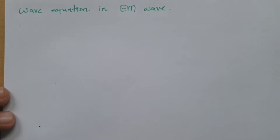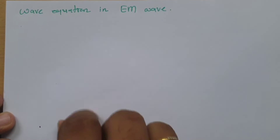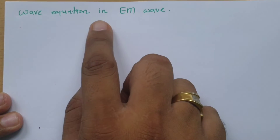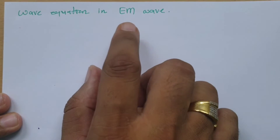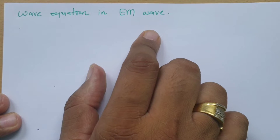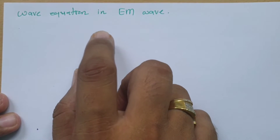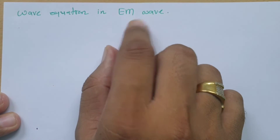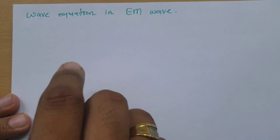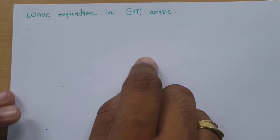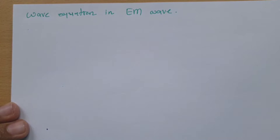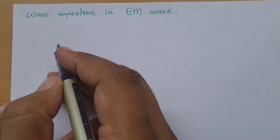Welcome to the Electromagnetics playlist. I, Professor Itesh Dholakia, am going to explain the wave equation in electromagnetic waves. In this session, I am going to derive the wave equation for EM waves. Step by step, I will explain how we can derive the wave equation. Let us begin this session with a derivation of the wave equation.